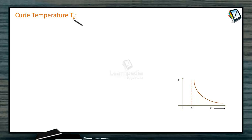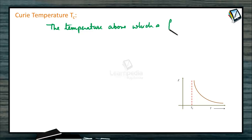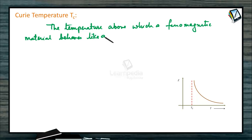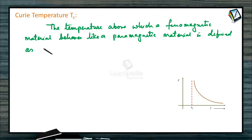Curie temperature. The temperature above which a ferromagnetic material behaves like a paramagnetic material is called Curie temperature, denoted as Tc.